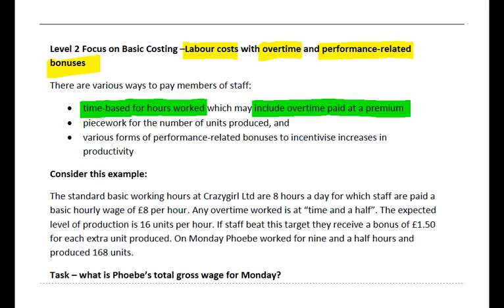For instance, if your basic wage was £10 per hour and your overtime premium was time and a quarter, that means that for the overtime hours, you get an extra quarter on top of your basic wage. If your basic wage is £10, a quarter of that would be £2.50, meaning that the total overtime rate would be £12.50 per hour - the basic of £10 plus this premium of an extra £2.50, the extra quarter. So watch out for overtime being paid at a premium.